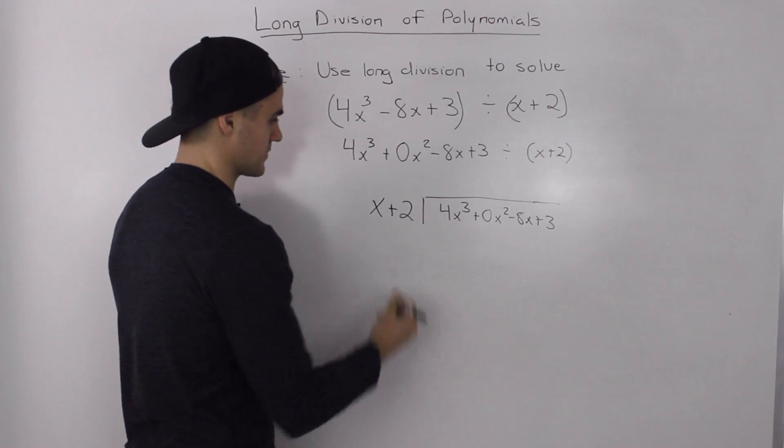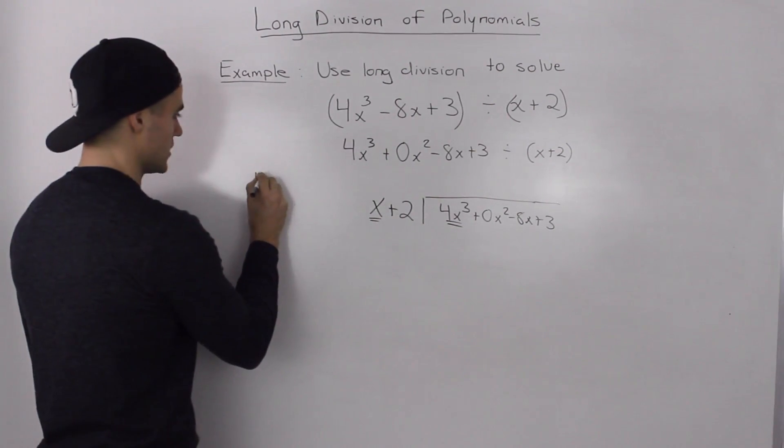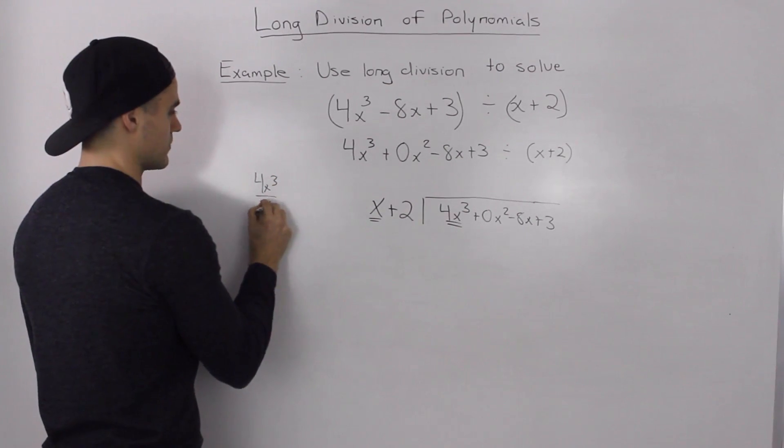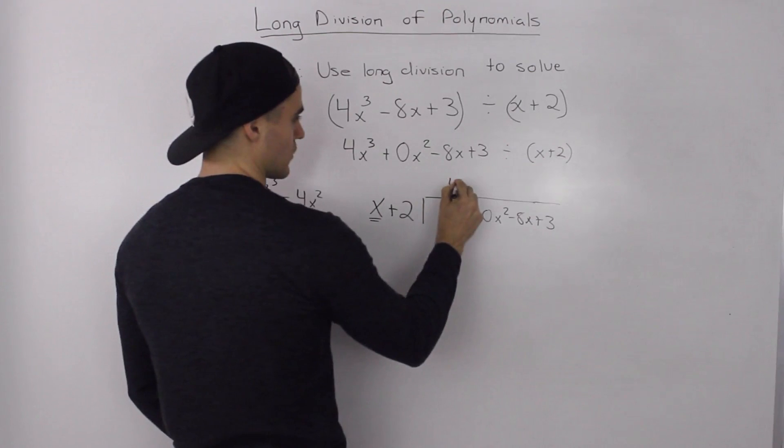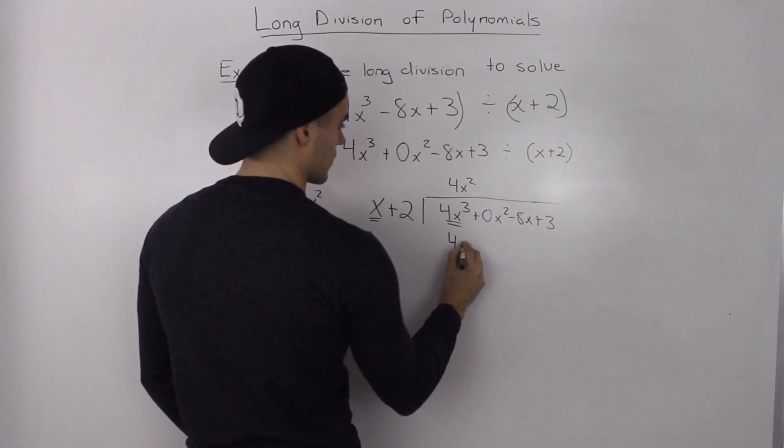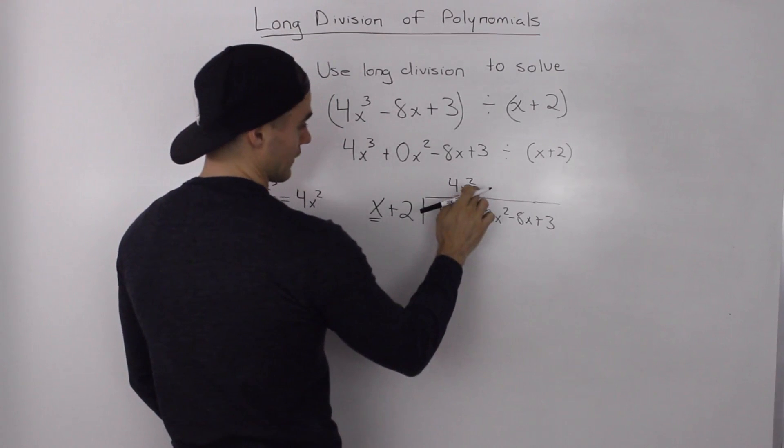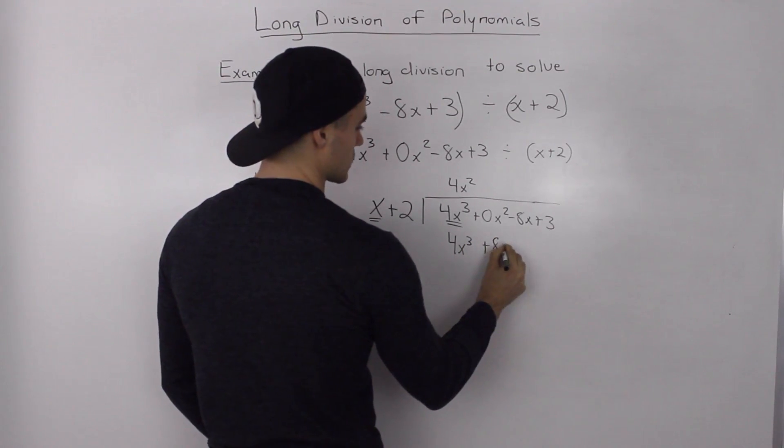And now the process is just the same. So, we find out how many times does x go into 4x cubed. So, 4x cubed divided by x, well, that ends up being 4x squared. So, 4x squared goes here, 4x squared times x is 4x cubed, and then 4x squared times 2 is 8x squared.